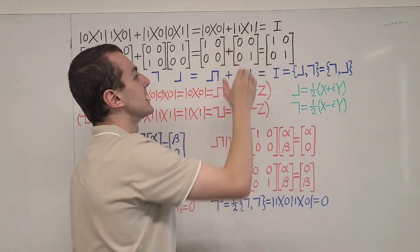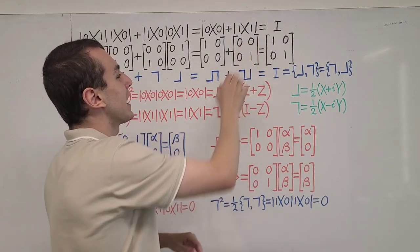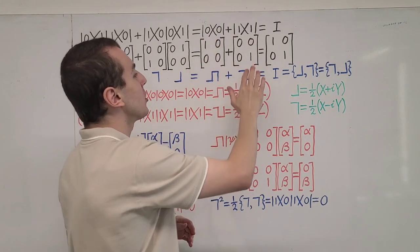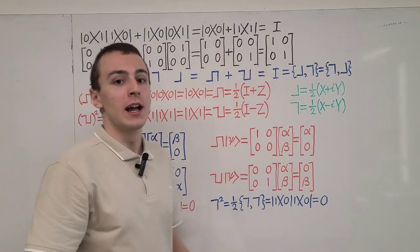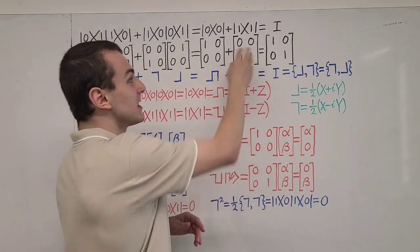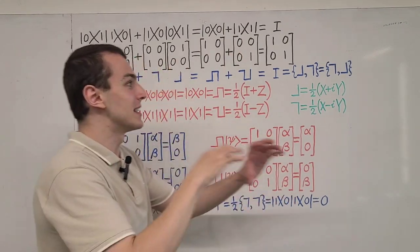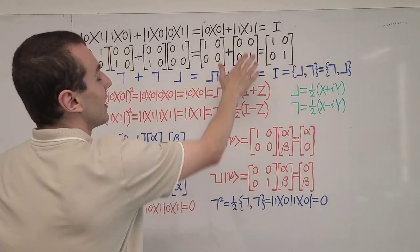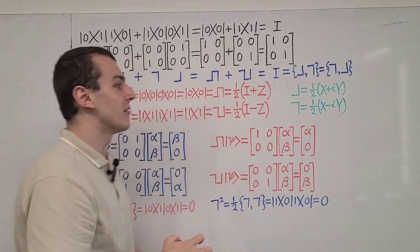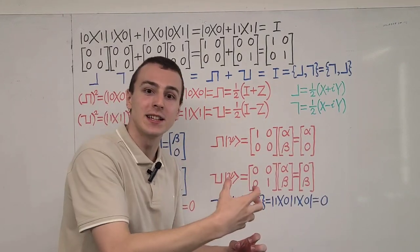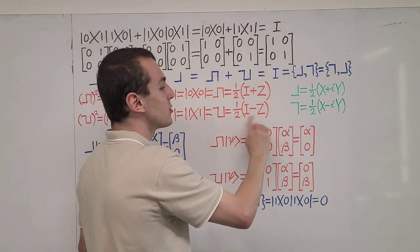You can think of this as counting how many excited states we have and how many ground states we have. In other applications, you can interpret this as a number operator and this as a hole operator. If you're familiar with how band gaps in transistors form, you can interpret these matrices as counting how many holes and how many particles there are in the material. These are projectors, and their defining property is that squaring them is the same as applying them once. We also have analogous relationships in terms of the Pauli matrices.